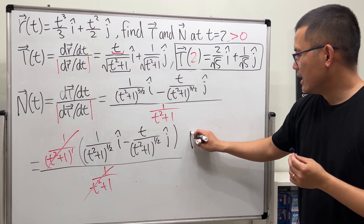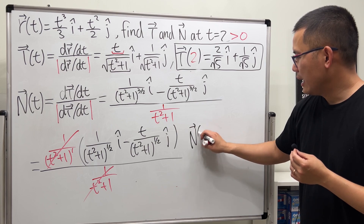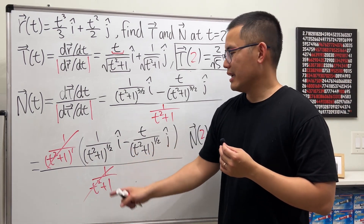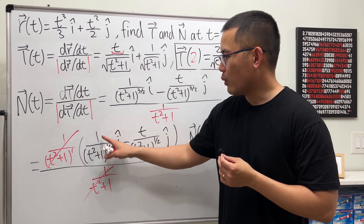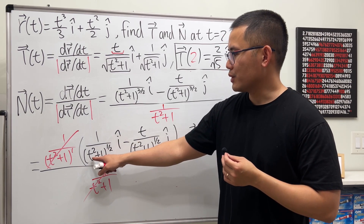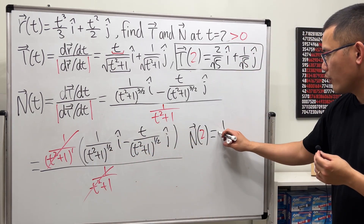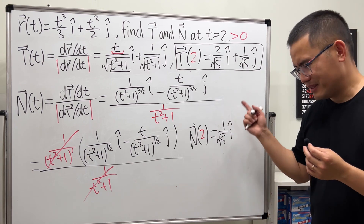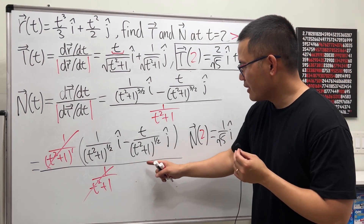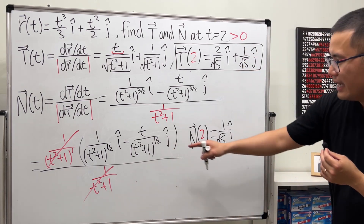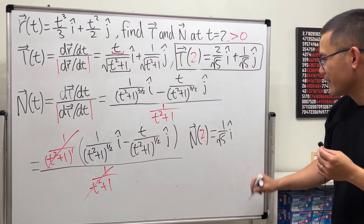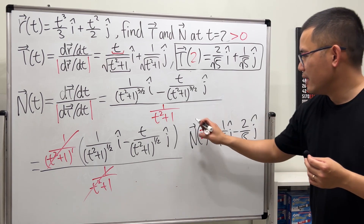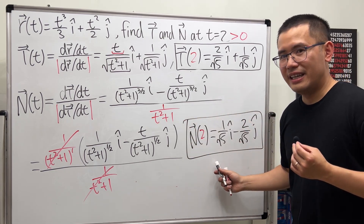Finally, to get N at t equals 2, plug 2 into all the t's. The half power is the same as square root, so we get 1 over square root of 5 for the i component. For j: minus 2 over square root of 5. So N(2) = (1/√5)i − (2/√5)j — consistent with our geometric answer.